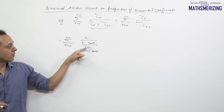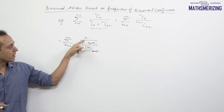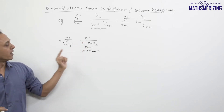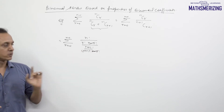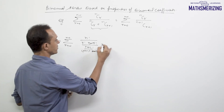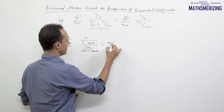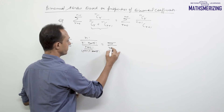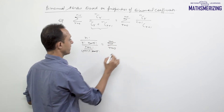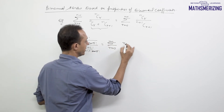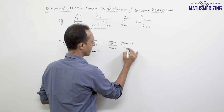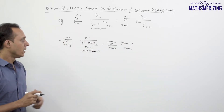Now factorial(n) and factorial(n+1): I can cancel factorial(n). For factorial(r) and factorial(r+1): I can cancel factorial(r). So I'm left with summation r varies from 0 to n-1 of (r+1) upon (n+1).